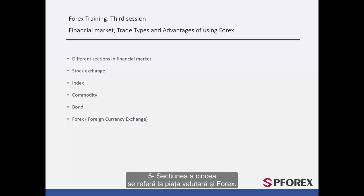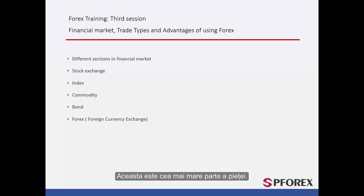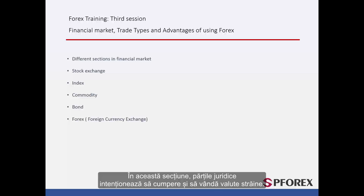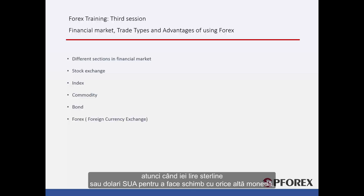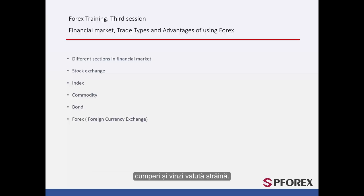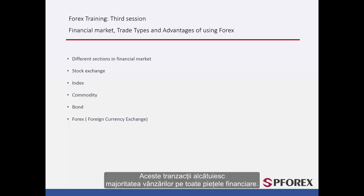The fifth section is related to the Foreign Currency Exchange and Forex. This is the largest part of the market. In this section, legal parties intend to buy and sell foreign currencies. For instance, when you take British Pounds or US Dollars to exchange for any other currency, you are selling and buying foreign currency. These kinds of transactions make up the majority of trades on all financial markets.